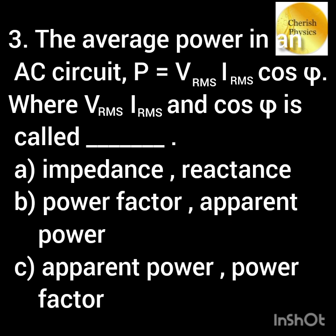The average power of an AC circuit: P is equal to V rms into I rms cos phi, where V rms, I rms, and cos phi is called the power factor.